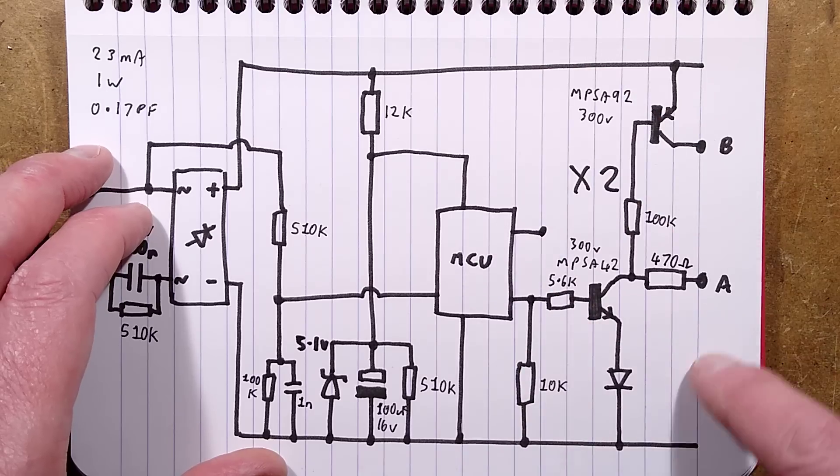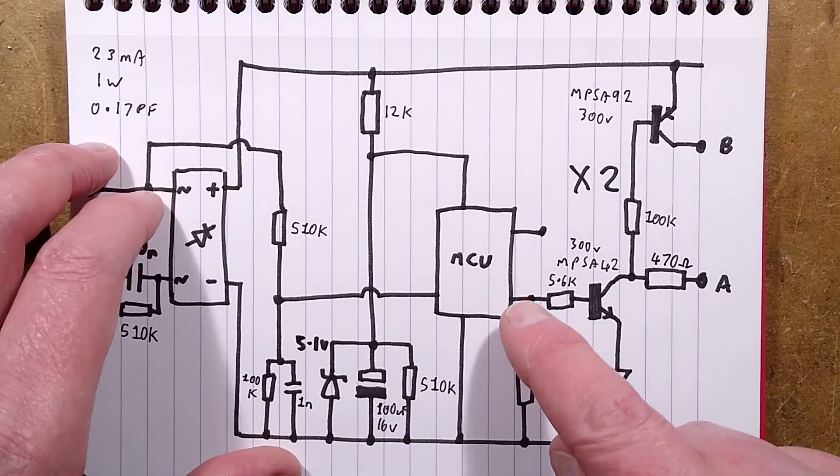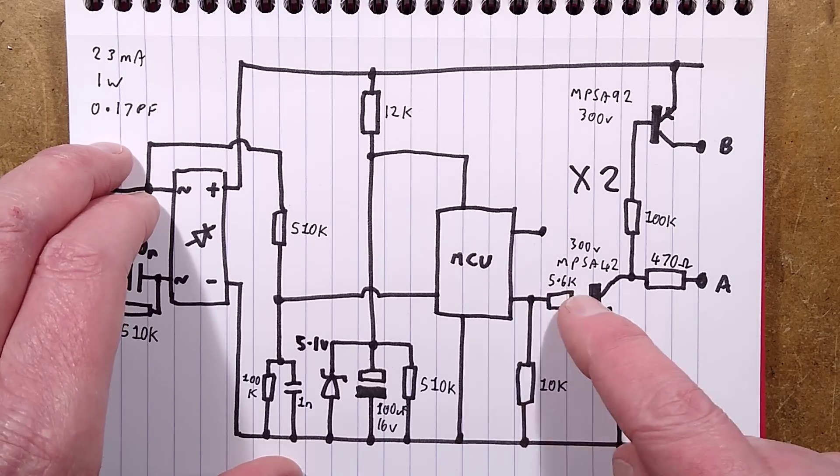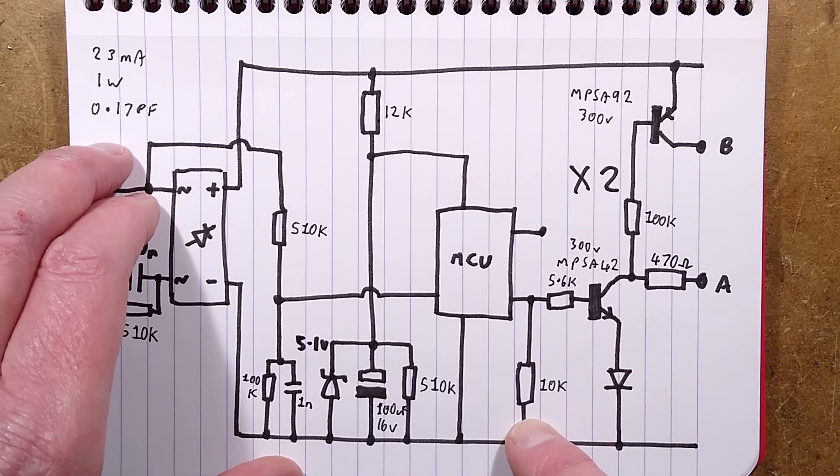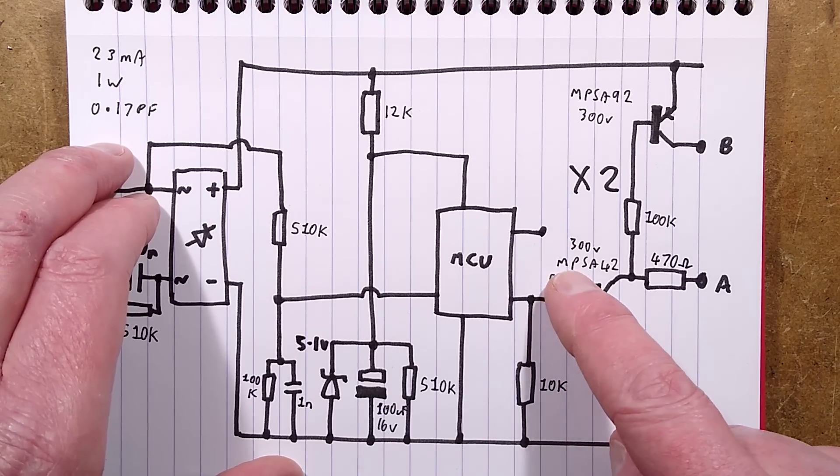Then I've only drawn half of the H bridge here because that's all we really need to see how it works. There are two outputs from the microcontroller - I mean it's only using five pins of it. And the output has a 10K pulldown resistor for stability, then it's got a 5.6K resistor to an MPSA42 high voltage NPN transistor, 300 volts.